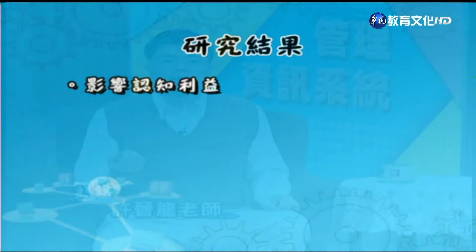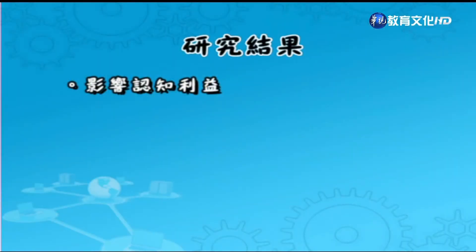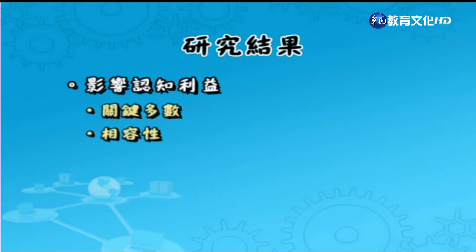經過508位研究參與者的問卷分析後，我們得到一個有趣的發現：影響物聯網使用意願的因素是認知利益（覺得對自己有益）以及態度（喜歡），這是正向影響；有趣的是，隱私是負向影響，大家還是會care隱私，在使用物聯網時有可能隱私外洩。那影響認知利益的因素包括：關鍵多數（很多人在用時你會覺得它很有利）、相容性（是否符合以前的經驗和價值觀）。